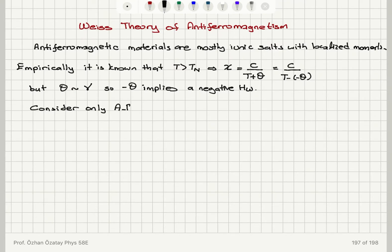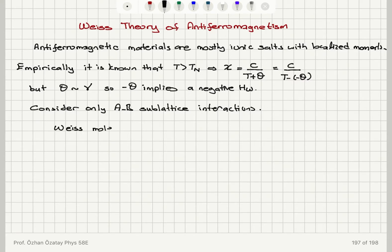For the rest of this discussion, consider only the interaction between the sub-lattices A and B — the A-B sub-lattice interactions. The first thing we need to do is find the Weiss molecular field acting on sub-lattice A.